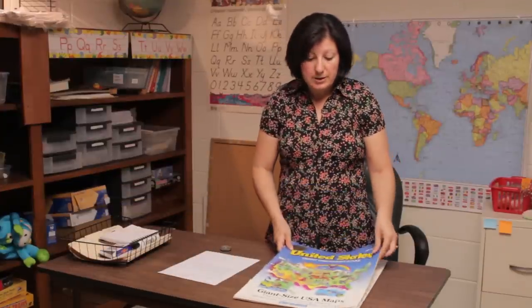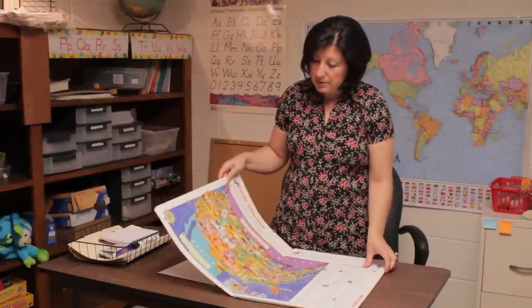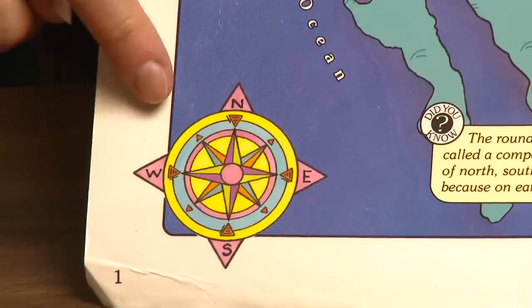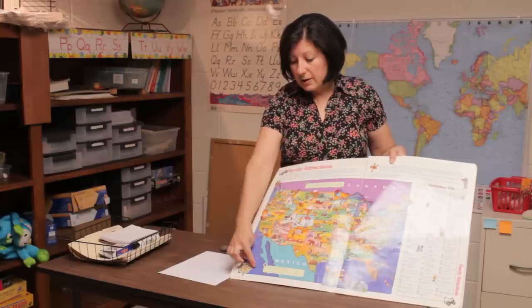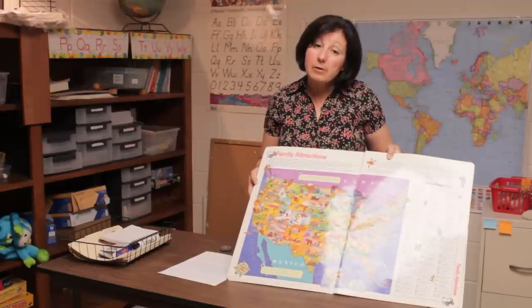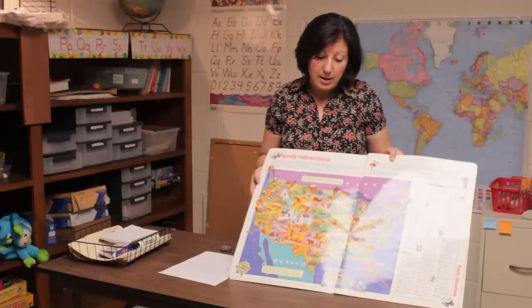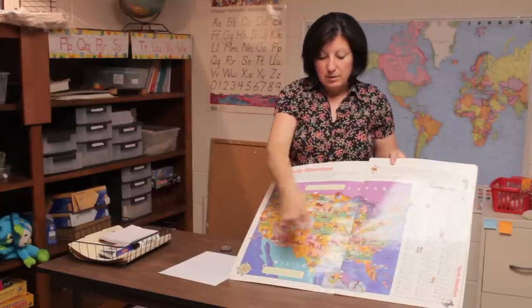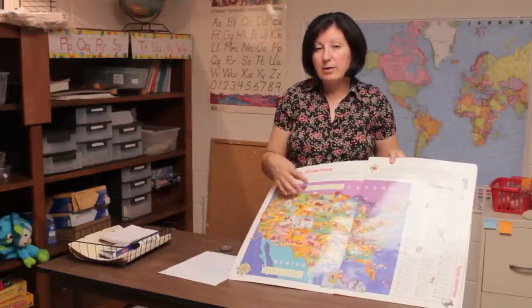After a student understands the four basic geographical directions, then you can show them a book such as this or a map that has a compass rose. Explain that the compass rose is often in the bottom corner. They'll see the north, south, east, and west on the compass rose. Give them opportunities to practice locating those directions on the map. Ask them to point to the eastern coast, the south, the west, and the north.